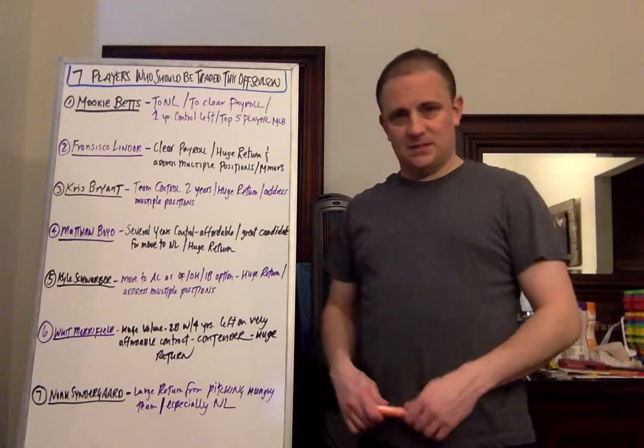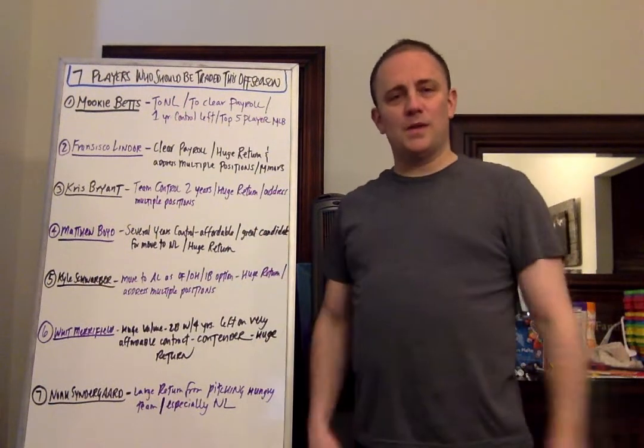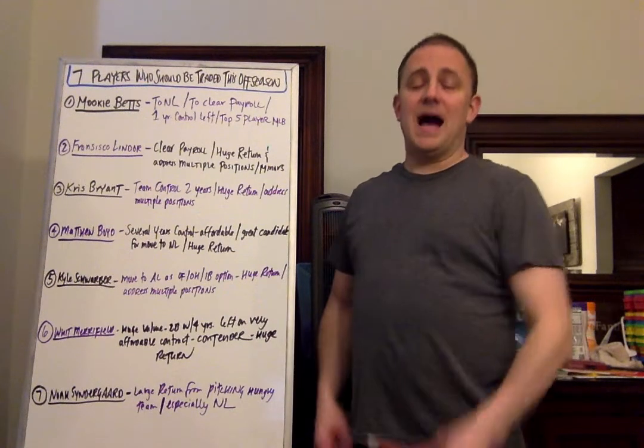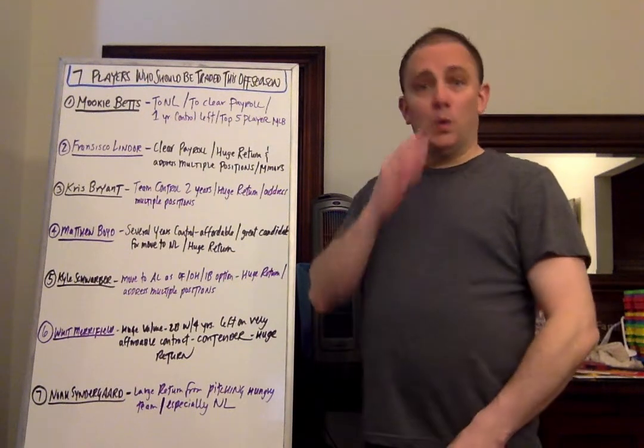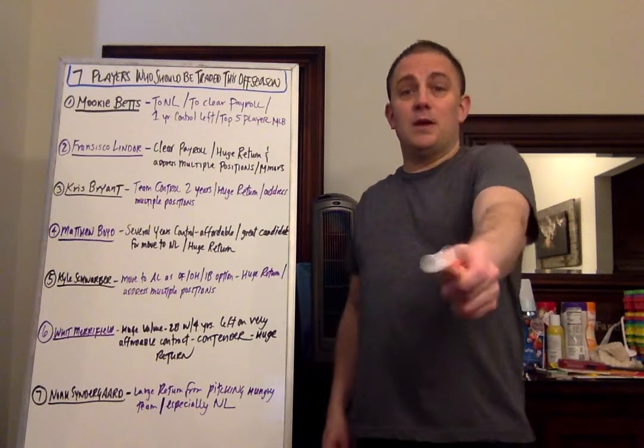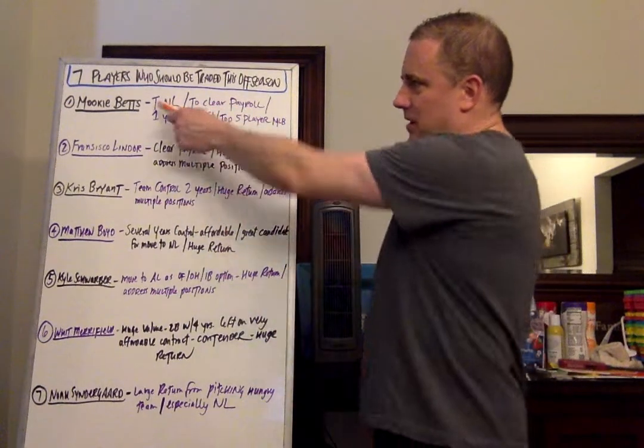Number one, Mookie Betts. Obviously, I think he's a good candidate to go to the National League, probably the Dodgers or a team like that, potentially even—I actually have a bold trade proposal to the New York Mets. If you're a Mets fan, I have a specific Mets video team breakdown, so make sure you watch that. I talk about Mookie Betts in there. But I think he's a good candidate to go to the NL for a number of reasons.